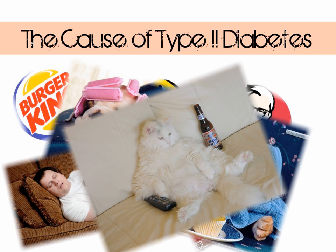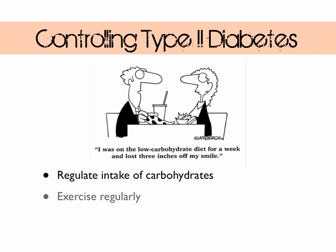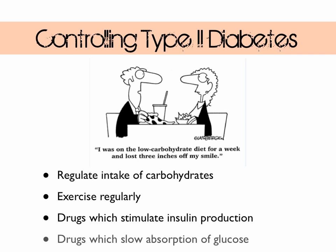Type 2 diabetes is controlled by regulating the amount of carbohydrates eaten and taking regular exercise. Medication can also be prescribed to stimulate the production of insulin, and other drugs can slow the absorption of glucose in the small intestine.